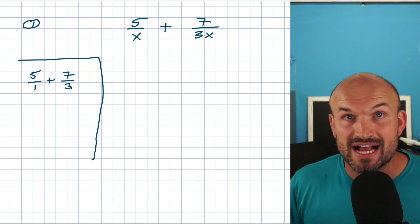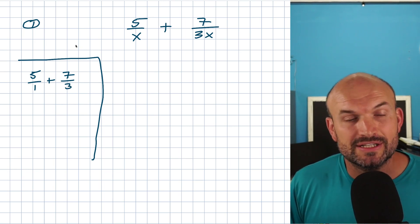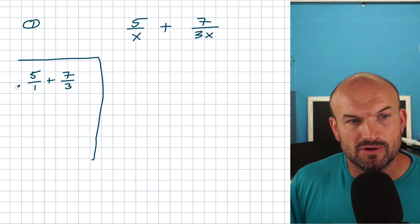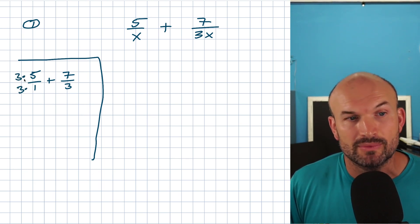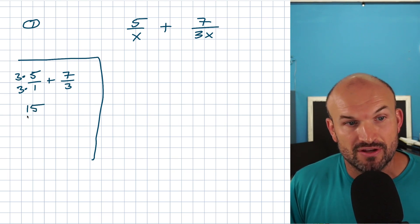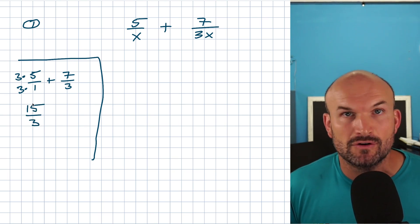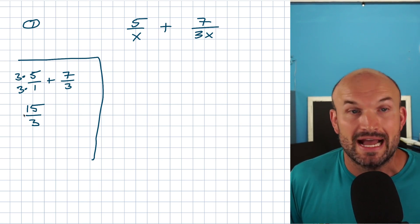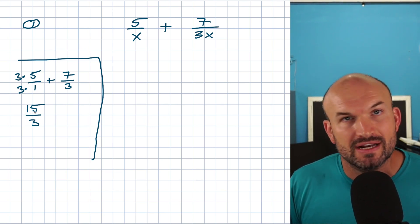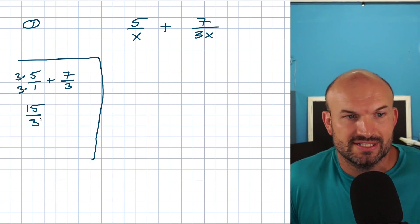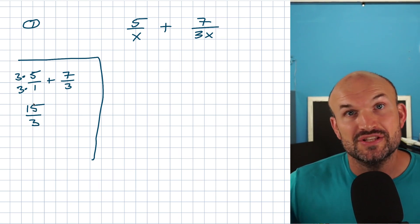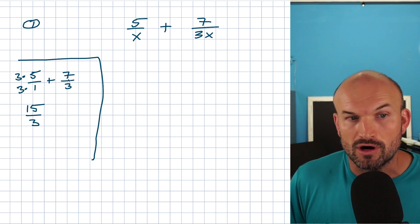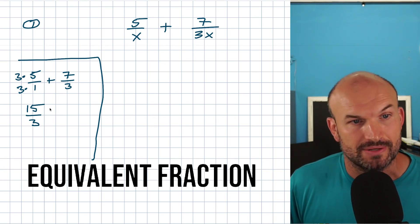What we need to do to achieve that is multiply by three on the left-hand side in the denominator as well as in the numerator. Then we attain a new fraction, 15 over three, which is equivalent to five over one. Because if you divide by three on the top and the bottom, you get five over one. So we're not changing the value of the fraction — we're just changing the form, which we call an equivalent fraction. Then we add that to seven thirds, giving us 22 over three, and we keep the denominator exactly the same.